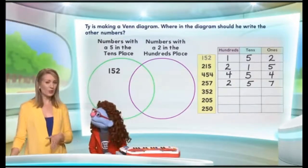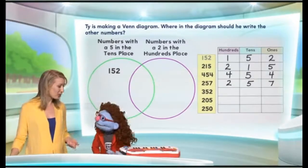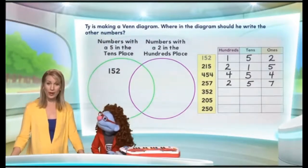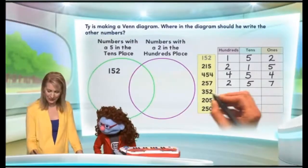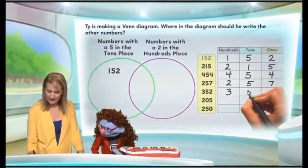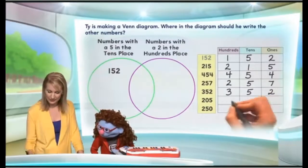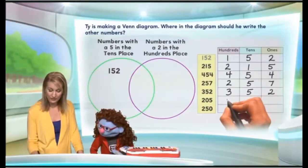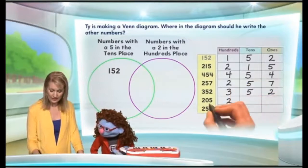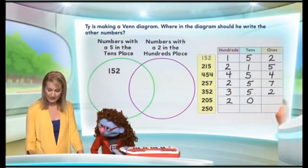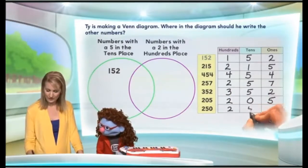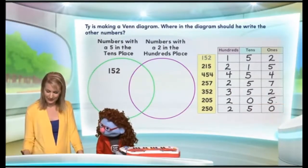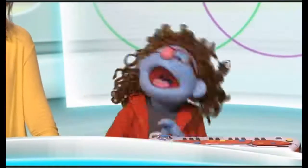How about I take over and quickly fill in the rest, because I think you understand this really well. 352 — we'll write the numbers in each of these places. 205: two hundreds, zero tens, and five ones. And 250: two hundreds, five tens, and zero ones. You're awesome! Thank you! It makes us all so happy!